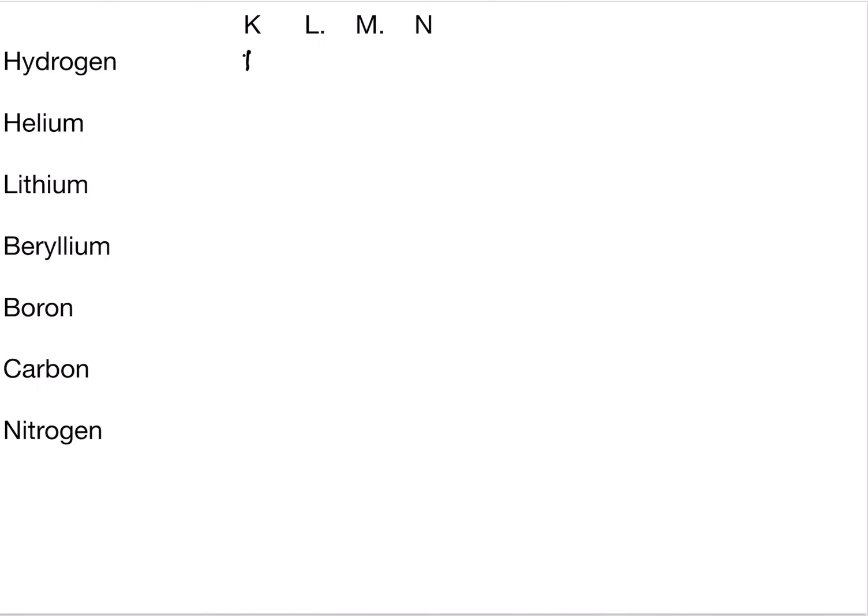Helium has an atomic number of 2, so we write 2 in the first K shell. Lithium has an atomic number of 3, meaning it has 3 protons and 3 electrons. So we write 2 in the first shell and 1 electron in the second L shell.